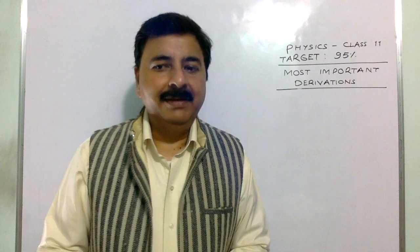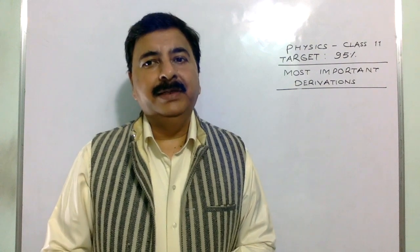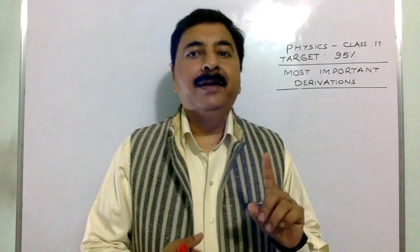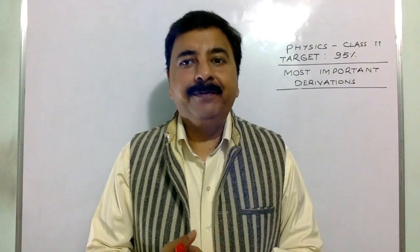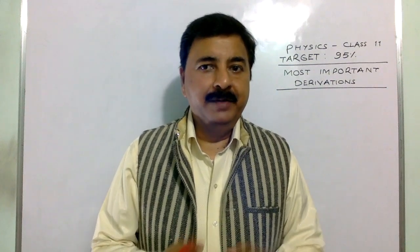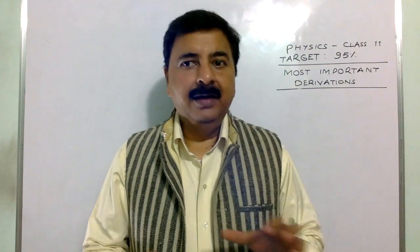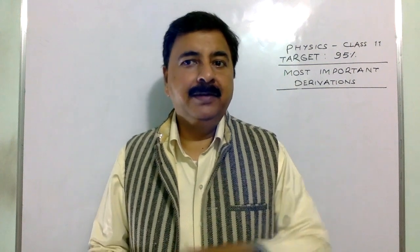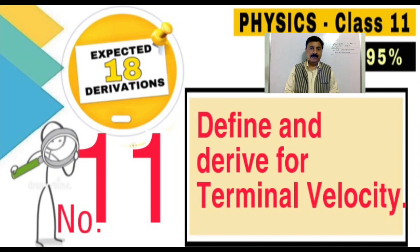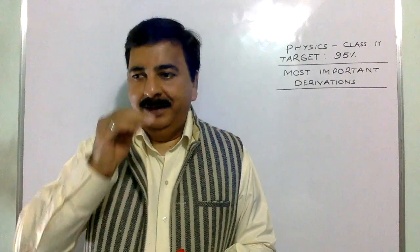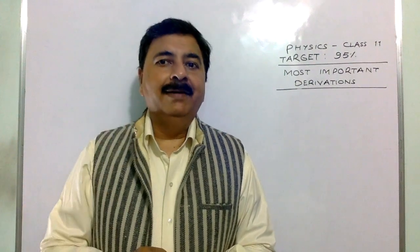Derivation number 11 is terminal velocity. How to find terminal velocity, define terminal velocity, and derive the formula for terminal velocity. You must know what is Stokes' law and how viscosity plays a role. So terminal velocity should definitely come. These are derivations 18 through 11.